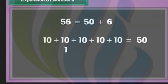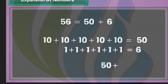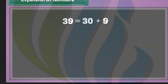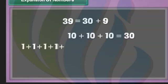Let us break two-digit numbers into tens and ones. Fifty-six can be written as 50 plus 6, meaning there are five tens and six ones in fifty-six. Similarly, thirty-nine can be written as thirty plus nine, meaning there are three tens and nine ones in thirty-nine.